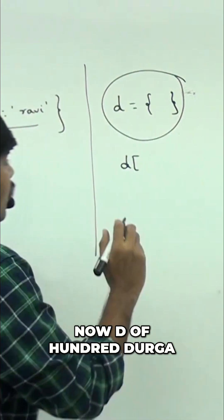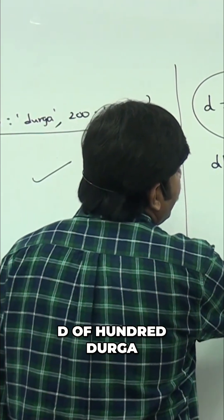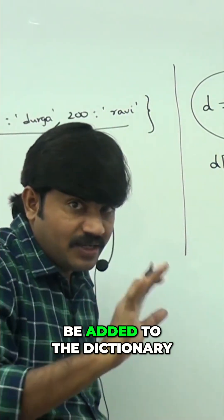Now, d of 100 durga. d of 100 durga. So 100 durga will be added to the dictionary.